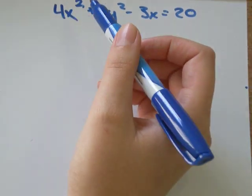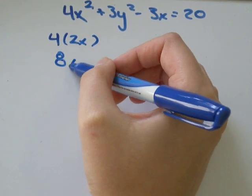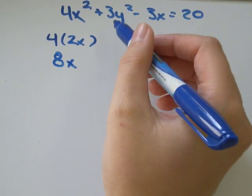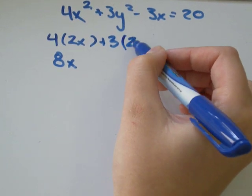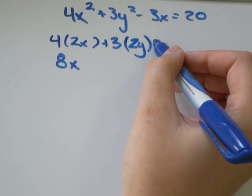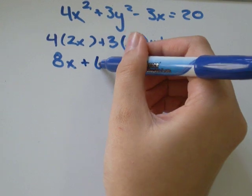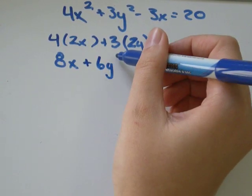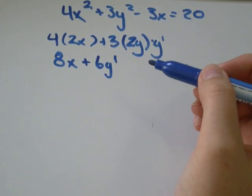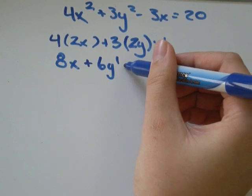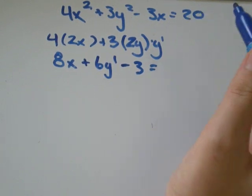The derivative of 4x² would be 4, derivative of x² is 2x, which would just be 8x. The derivative of 3y² would just be 3 times, if it was x², it would be 2x, but it's not, it's y. So we'll put 2y and multiply it by y prime. 3 times 2 would be 6y'. And then, negative 3x? The derivative of x is just 1, so this will just become negative 3 equals the derivative of any constant, any number, would just be 0.